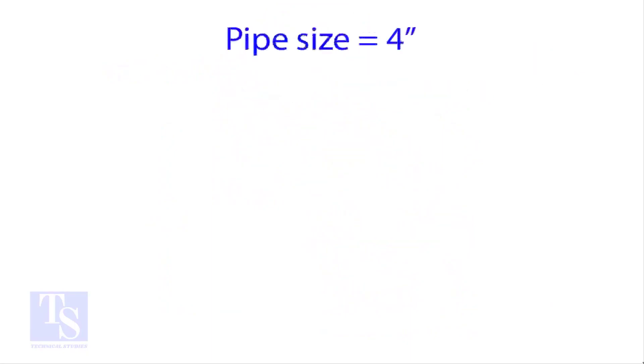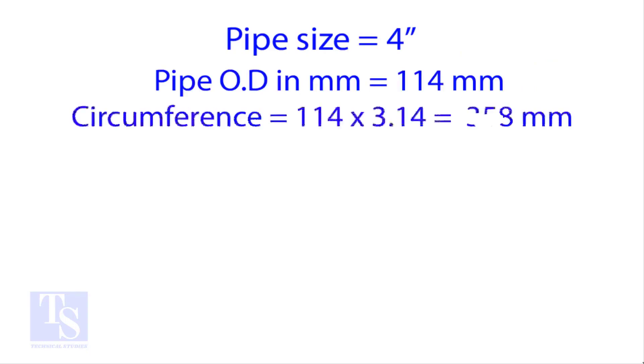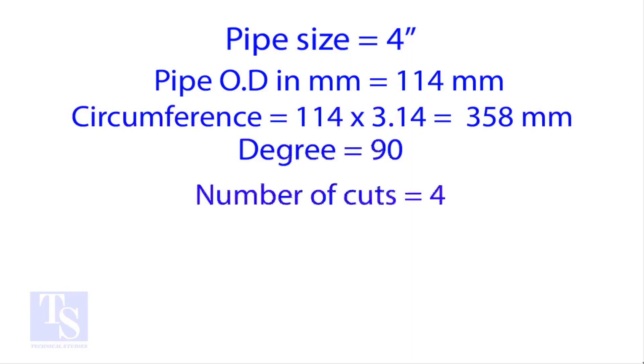Let us try an example. Calculate the cutback of a 4 inch pipe with 4 cuts. OD of a 4 inch pipe is 114 millimeters. Multiply the OD by 3.14 for the circumference. The bend angle is 90 degree. Number of cuts is 4.